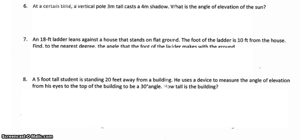Let's take a look at six. Six. At a certain time, a vertical pole three meters tall casts a four meter shadow. What is the angle of elevation of the sun? To me it seems like the three meters tall and the four meter shadow are pretty important, and the angle of elevation of the sun is the question they're asking. But what does that actually look like? So here's my diagram.